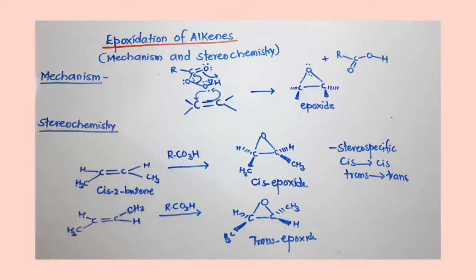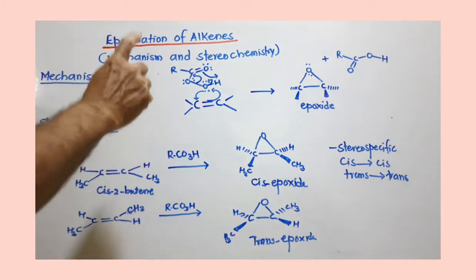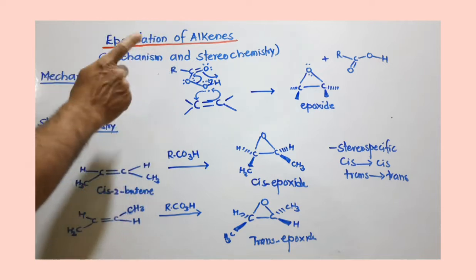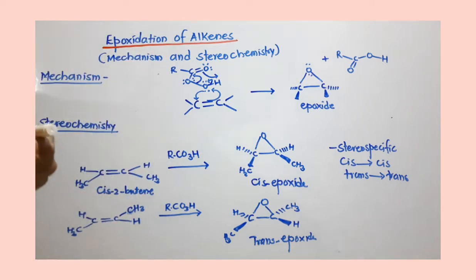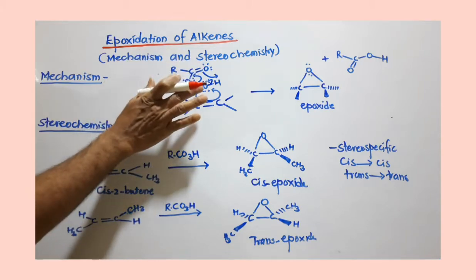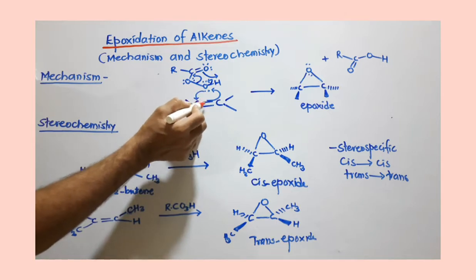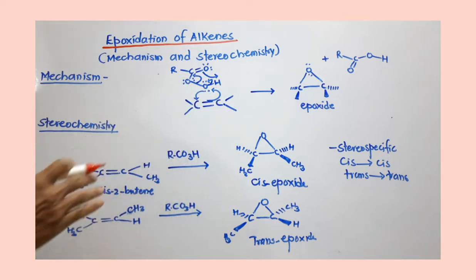So this peroxy acid is used for this oxidation. Now see the mechanism is shown here. You have to watch this mechanism carefully. Now you have to write this peroxy acid like this, terminal OH which will come close to the carbon-carbon double bond of the alkene.